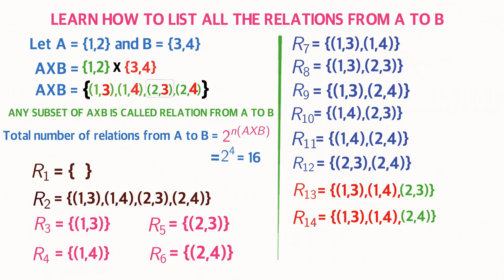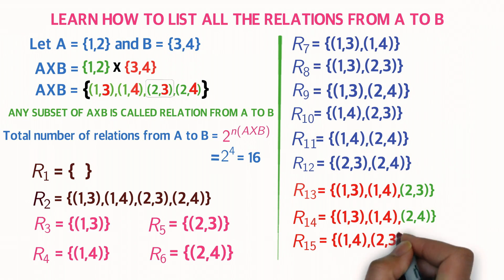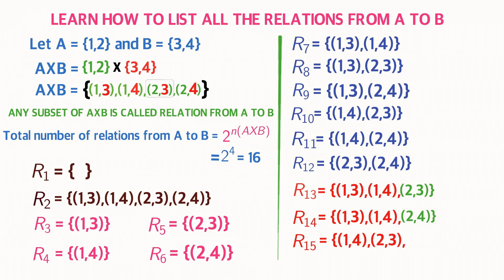R15, the fifteenth relation: take the second and third elements — ordered pair (1,4) and ordered pair (2,3). Moving right, the next immediate element is ordered pair (2,4). Therefore R15 equals the set containing ordered pair (1,4), ordered pair (2,3), and ordered pair (2,4).